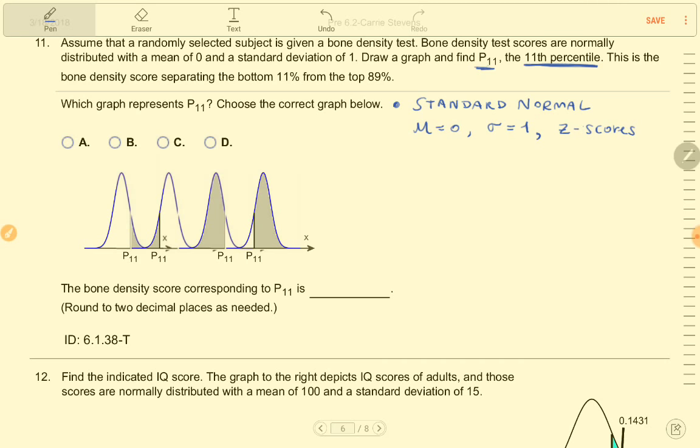11% is a small percentage, so I would be looking for a small left-hand shaded region. So that would be B, this one.